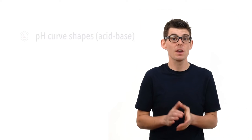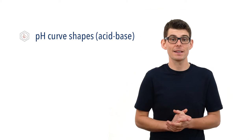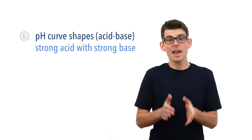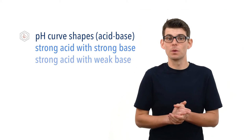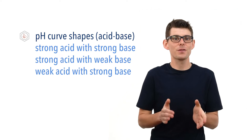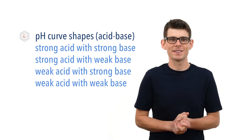Hello, Matt here from chemistrystudent.com. In this video we're going to look at pH curves for acid base titrations. We're going to outline the four standard shapes of pH curves for titrating a base against an acid: a strong acid with a strong base, a strong acid with a weak base, a weak acid with a strong base, and finally a weak acid with a weak base.